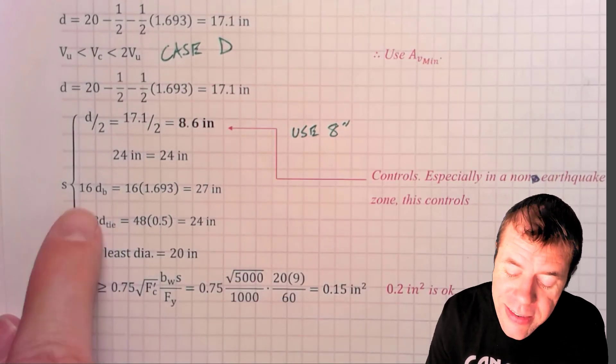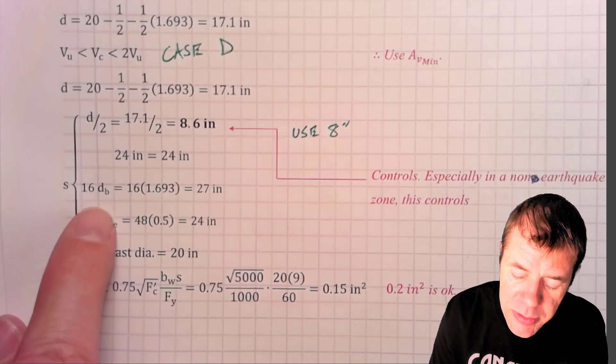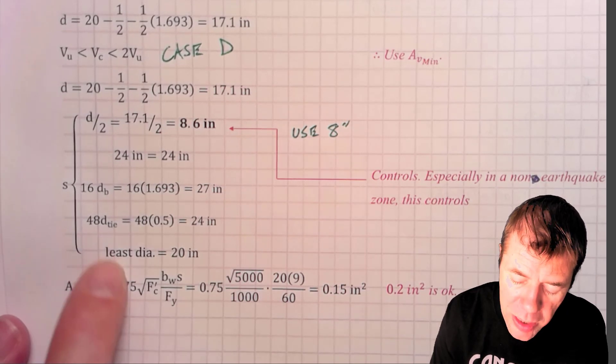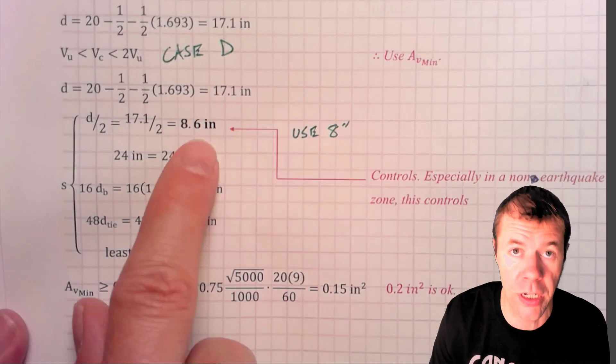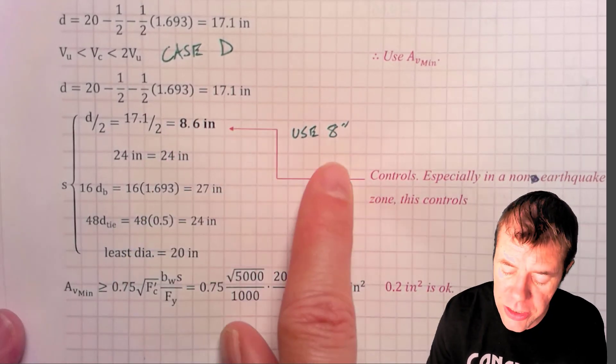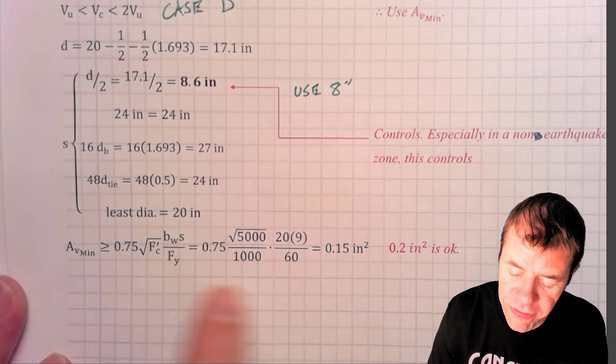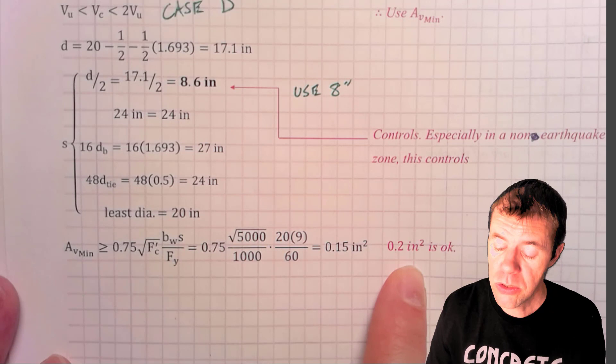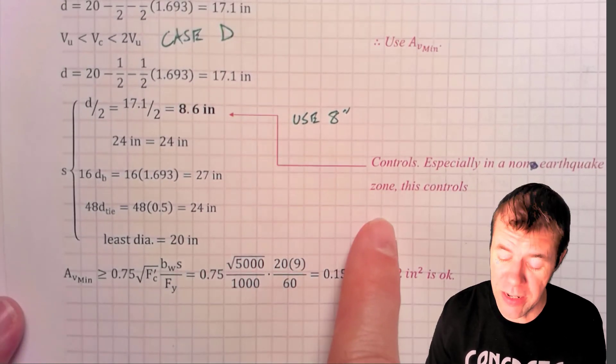So, for my S, I need either D over 2, which is 8.6, 24, 16 times the diameter of my longitudinal bars, 48 times the diameter of my ties, or my least dimension of my member. And out of all these, 8.6 is going to control. So, I would use 8 inches. My A V minimum, if I calculate that here, I need 0.15 inches squared, and I'm providing 0.2 inches squared. So, I am good there. So, in a non-earthquake zone, I would be finished, but let's look at these earthquakes.